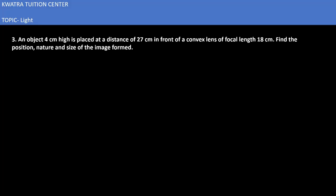Let's start with the third one. In this it says an object 4cm high is placed at a distance of 27cm in front of a convex lens of focal length 18cm. Find the position, nature and size of the image.